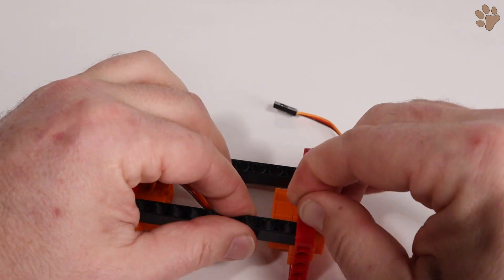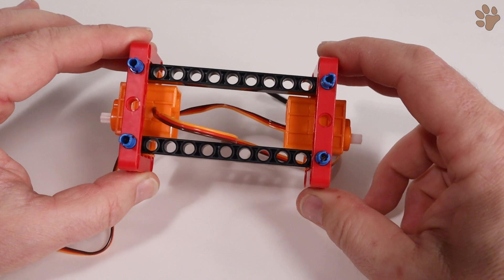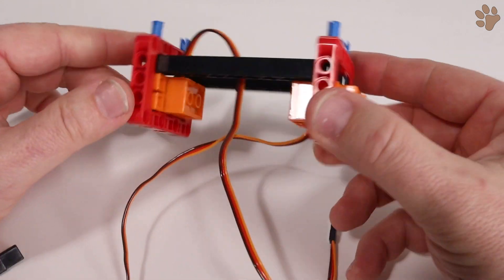Repeat this on the other side. Note that the long pin should go in two-thirds of the way, with one-third still sticking out.